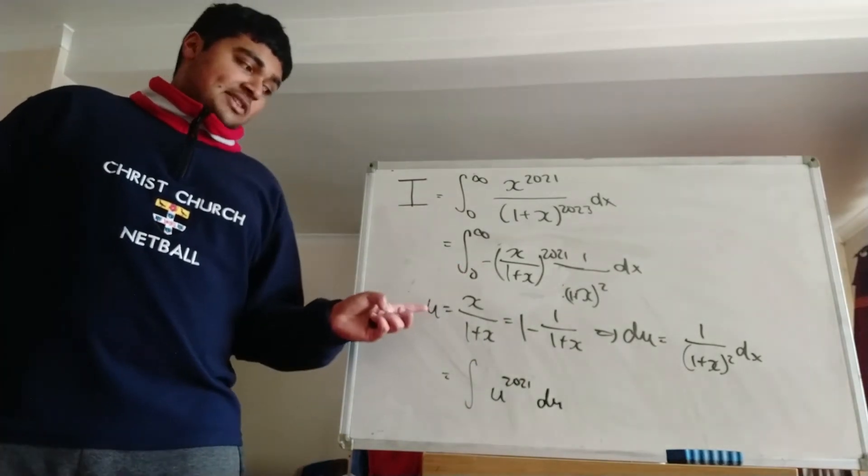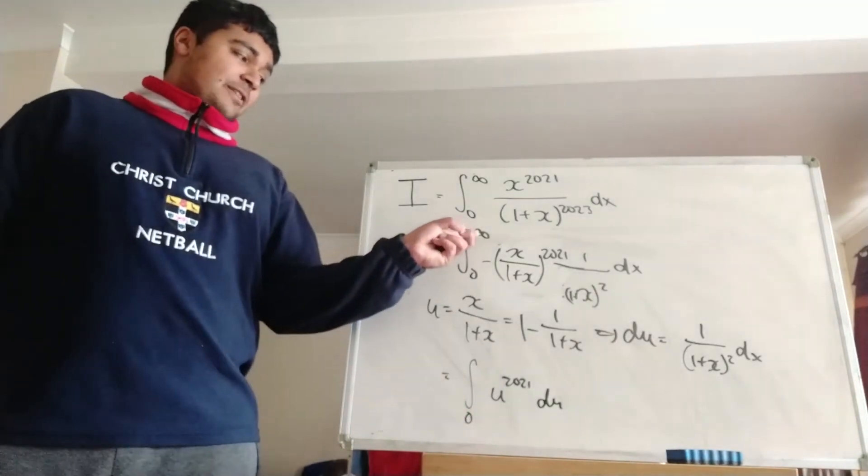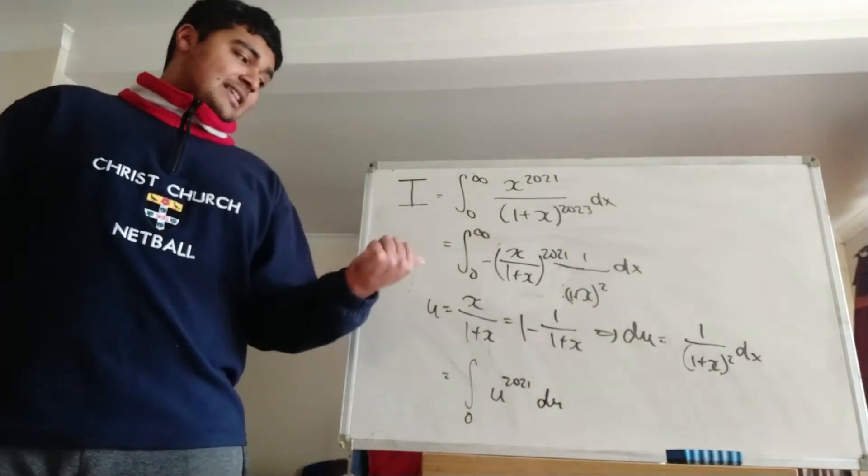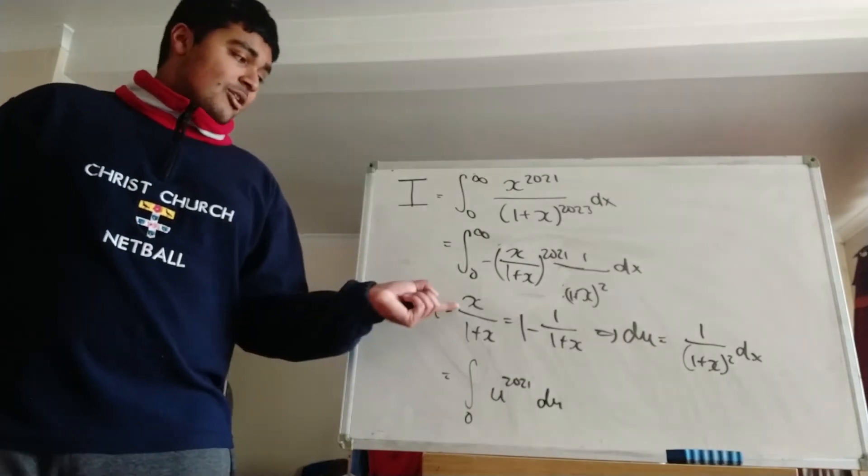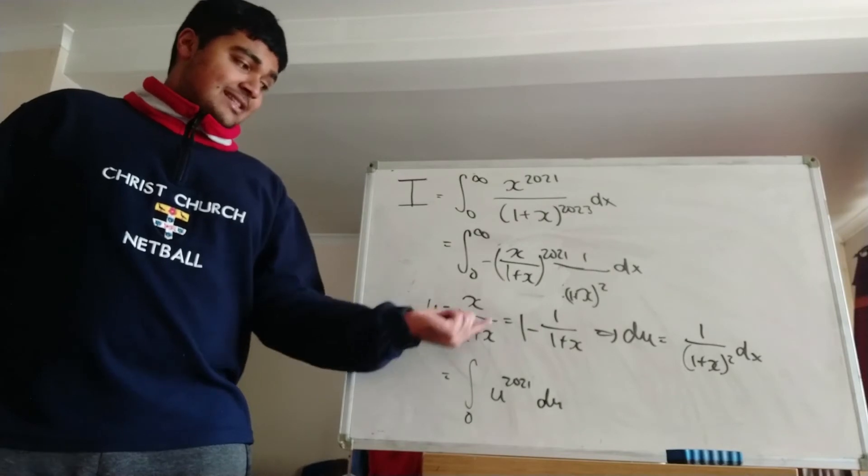Well when x is 0, u is just going to be 0 over 1, so 0. And then as x tends to infinity, this guy here is going to tend to 1. And one way of seeing that is you could just use L'Hopital's rule on this guy here. Take the limit as x goes to infinity of the top and bottom, and you'll see that this guy here tends to 1.